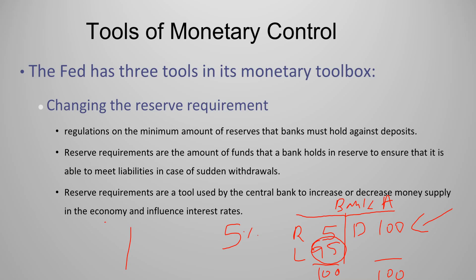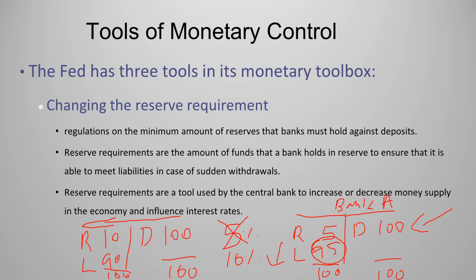If the reserve requirement were 10%, and the central bank wants to decrease money supply by decreasing the amount of loans available, it will increase the reserve requirement to 10%. In that case, out of $100 in deposits, commercial banks will have to keep $10 as reserves and will have only $90 to give away as loans. As the amount of loans decreases, the money supply will decrease. Conversely, the central bank can reduce the reserve requirement from 5% to 2%, in which case banks will give out loans of 98% and keep reserves of 2%, increasing the money supply.